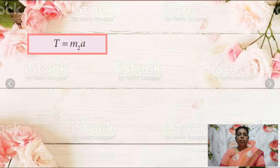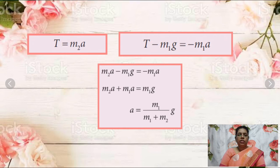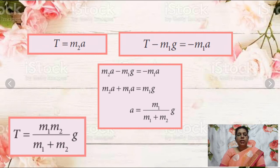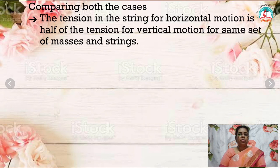By adding the two equations — T equals M2a and T minus M1g equals minus M1a — we get M2a minus M1g equals minus M1a, or M2a plus M1a equals M1g. Therefore A equals M1 divided by (M1 plus M2), times g. Substituting in T equals M2 times A, we get T equals M1M2 divided by (M1 plus M2), times g. Comparing the two cases: the tension in the string for horizontal motion is half of the tension for vertical motion for the same set of masses and strings.